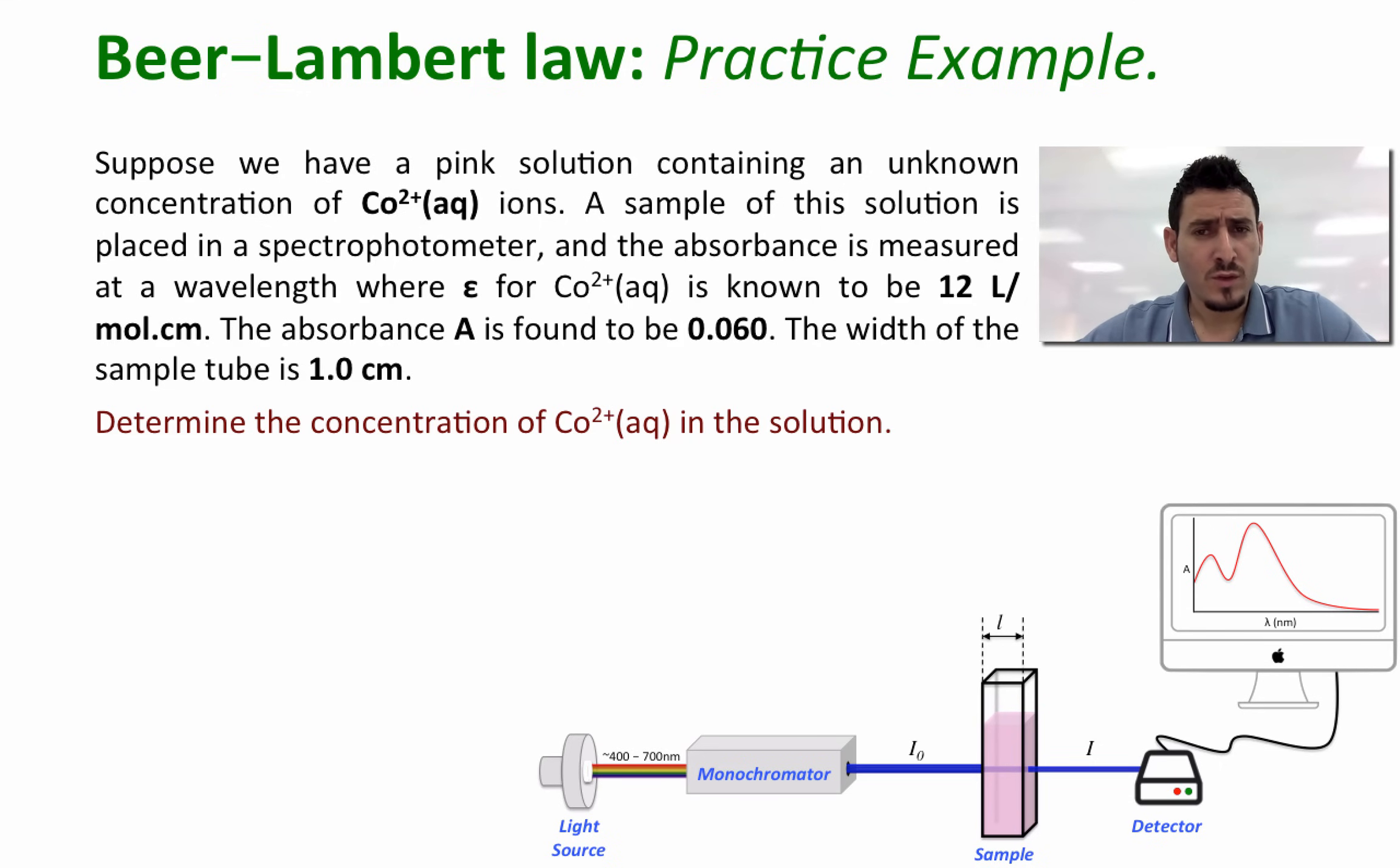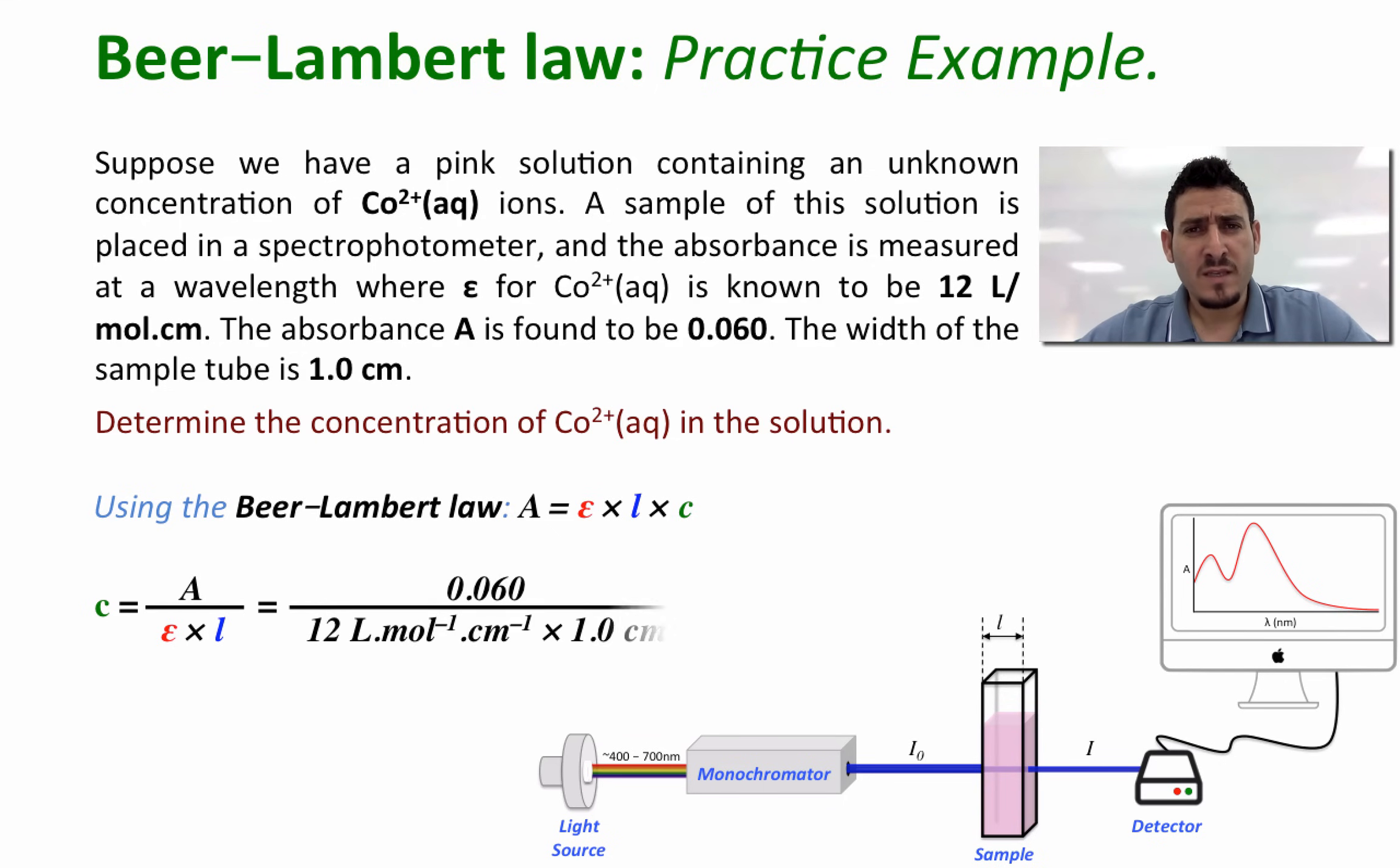Since cobalt-2 is the only absorbing species in solution, we can use Beer-Lambert's law. Since we know the absorbance, epsilon, and l, we can find c. c equals absorbance divided by epsilon l. Replacing each term by its value and cancelling the units, we get that the concentration is equal to 5.0 times 10 to the power minus 2 mole per liter.